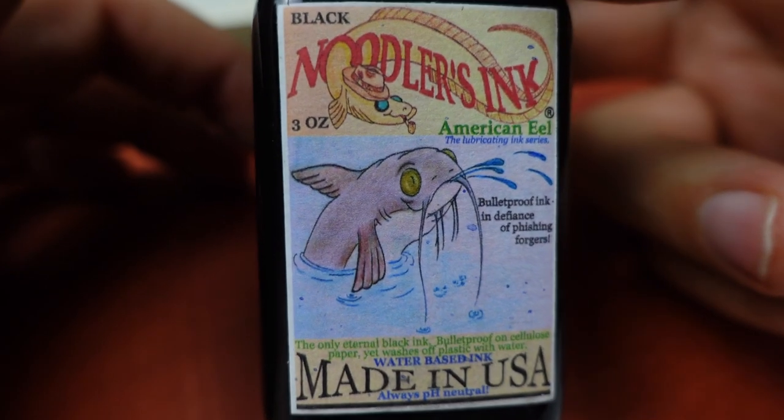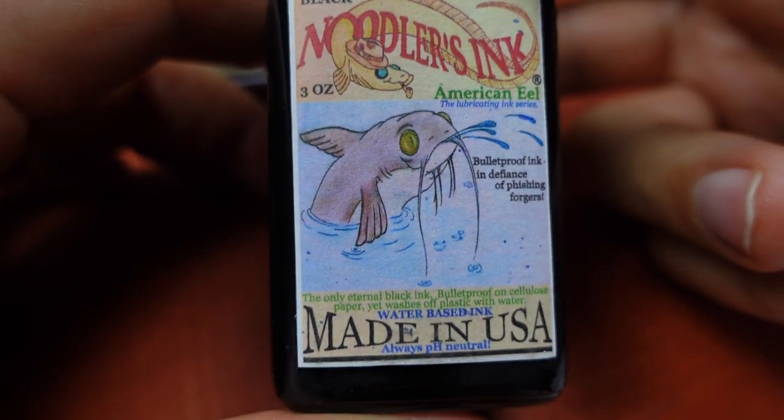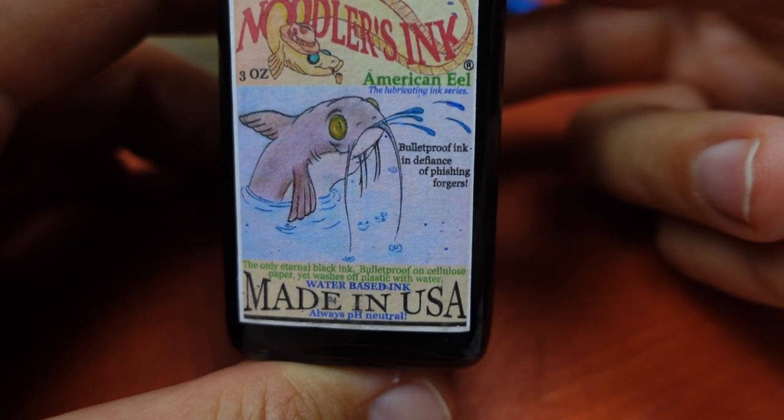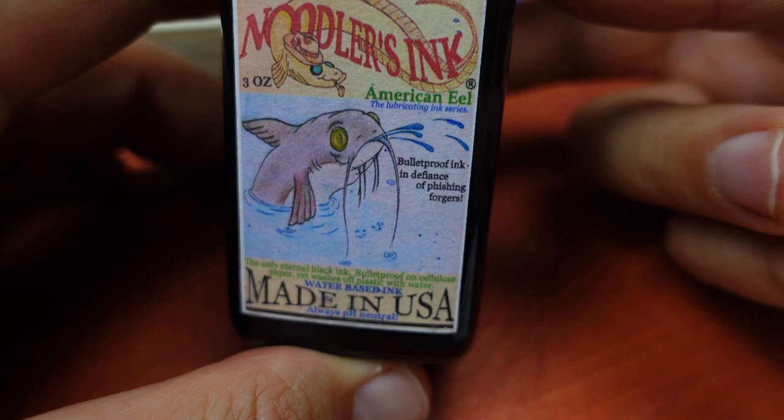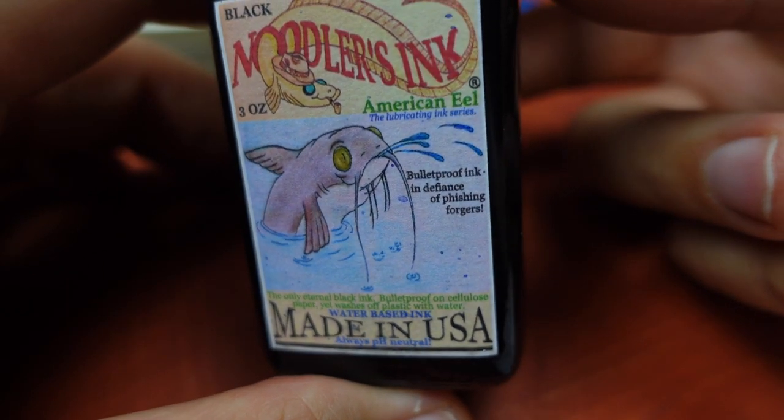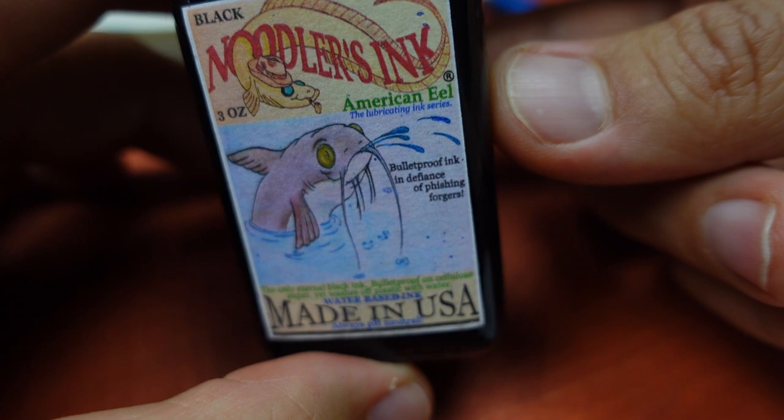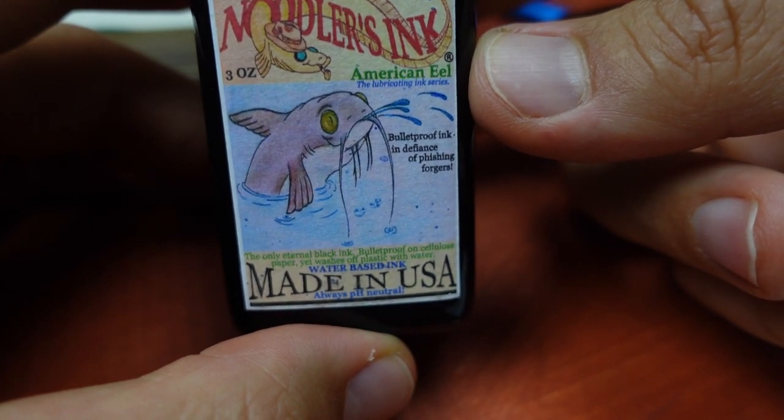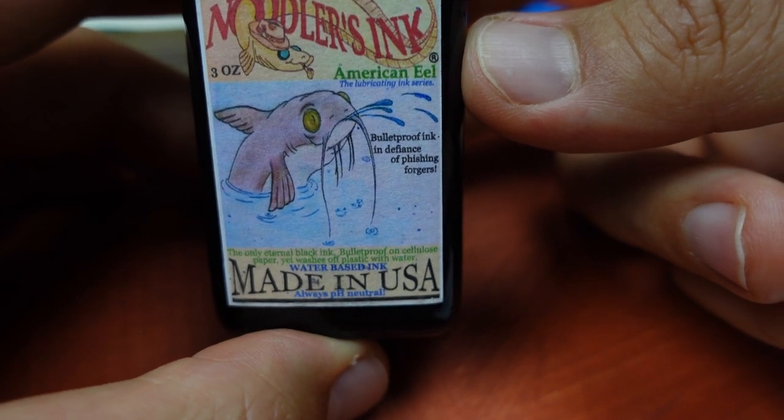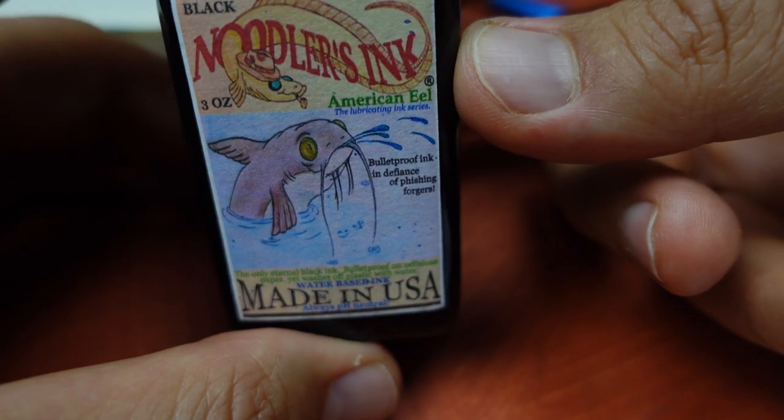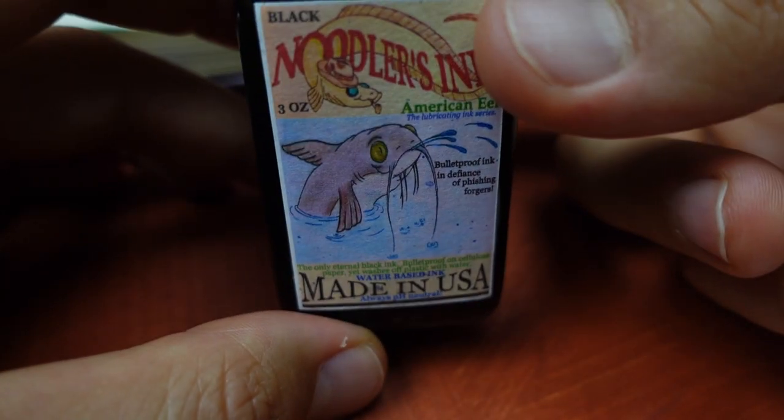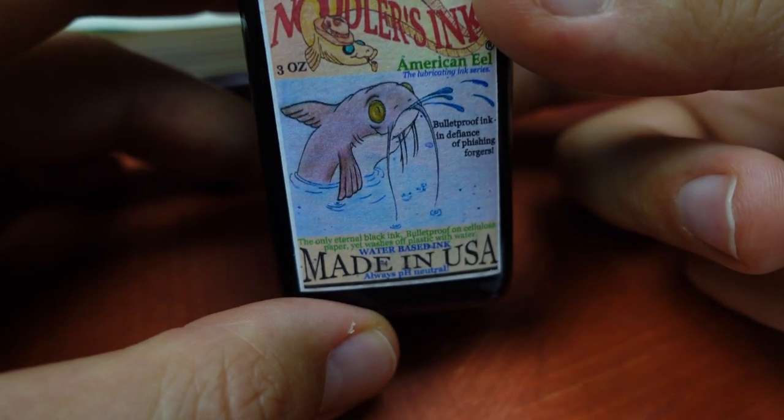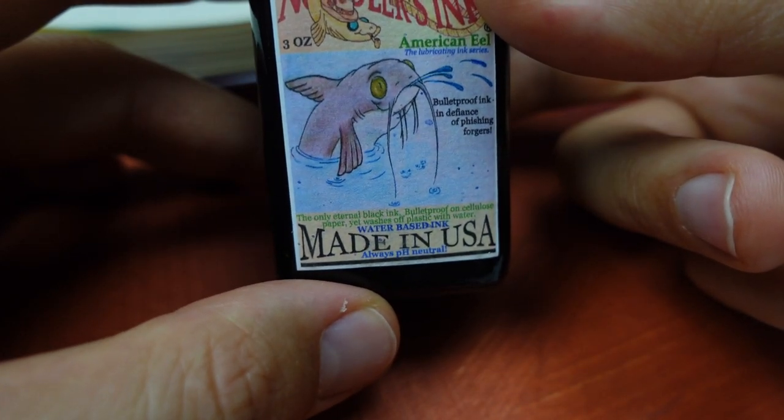Looking again at Noodler's bottle, I see that it says it's bulletproof on cellulose type paper. I'm not sure what bulletproof means. Maybe it's not waterproof. I tried Noodler's ink on other papers. It's dried. Though there were areas that weren't dried completely. But it seems it's not completely waterproof and depends on paper and what time you wait.